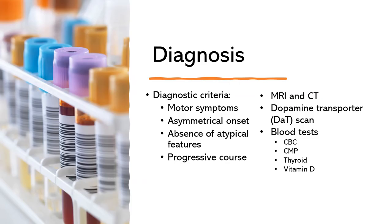The diagnosis of Parkinson's disease is primarily based on clinical evaluation and assessment of a patient's medical history, symptoms, and physical examination. There is no specific test or biomarker that can definitively confirm Parkinson's disease, so the diagnosis is typically made based on a combination of clinical findings and ruling out other possible causes of similar symptoms. Typical diagnostic criteria include the presence of motor symptoms such as bradykinesia — a slowness of movement — rigidity, stiffness of the muscles, and tremors, involuntary shaking.